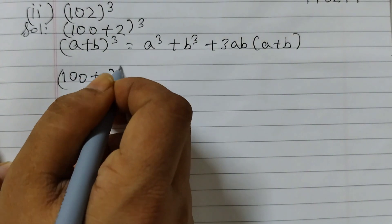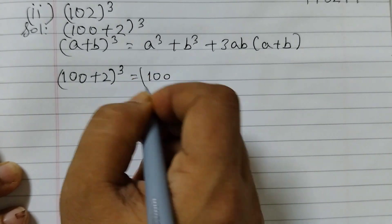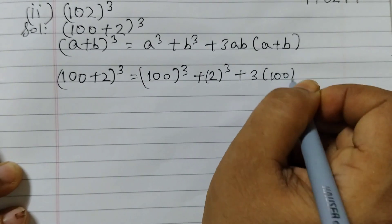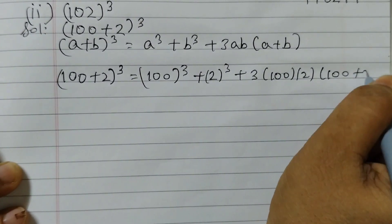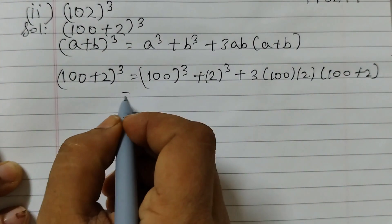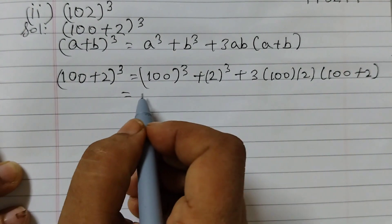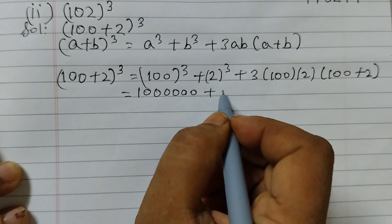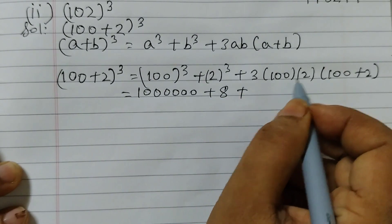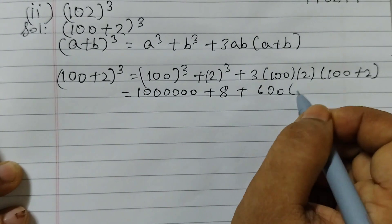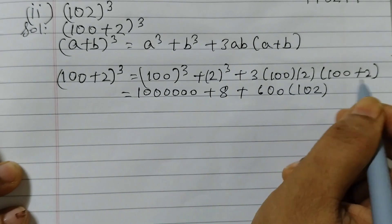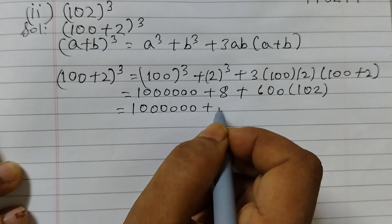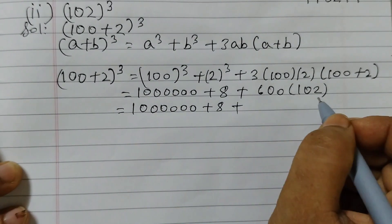Now we evaluate: (100 + 2)³ = 100³ + 2³ + 3 × 100 × 2 × (100 + 2). So 100³ is 1,000,000 — that's 6 zeros. Then 2³ = 8, and 3 × 100 × 2 = 600, so we have 600 × 102.